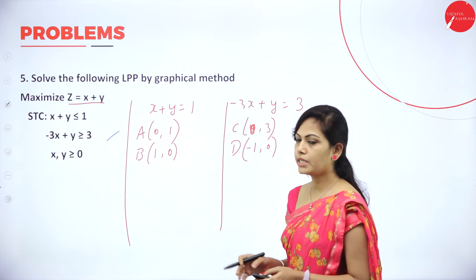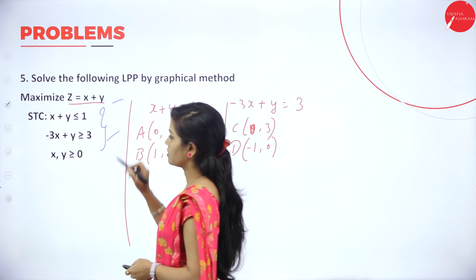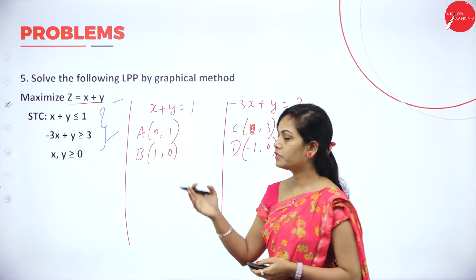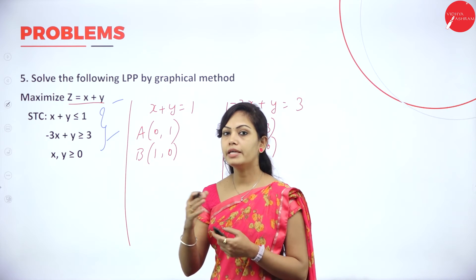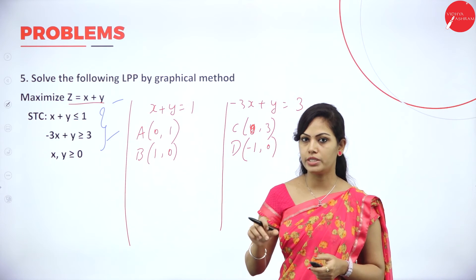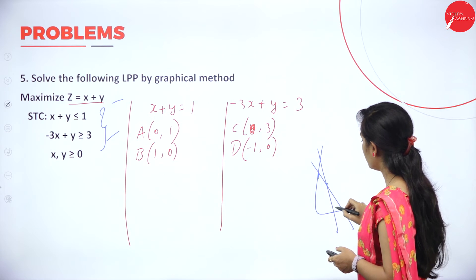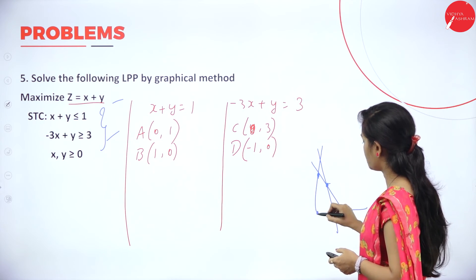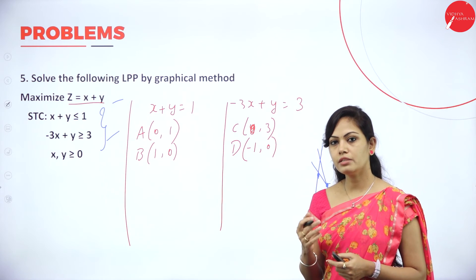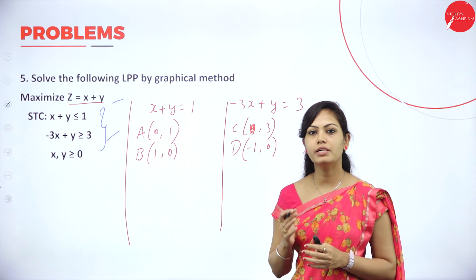In LPP graphical method, first you have to determine whether it is maximization or minimization, and then examine the constraints. If a constraint is greater than or equal to, the region is opposite to the origin. If it is less than or equal to, the region is towards the origin. Then you can find the feasible points. If you get feasible points, find the corner points and use them to find the minimum or maximum value.